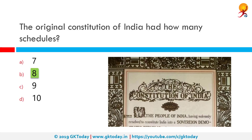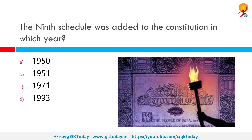The 35th Amendment made Sikkim an associate state. Once Sikkim became a state in India, the tenth schedule was repealed but later added once again by the 52nd Amendment Act 1985 in context with the anti-defection law. The 11th schedule was added by the 73rd Amendment and lists subjects under Panchayat Raj institutions or rural local government. The 12th schedule was added by the 74th Amendment and enlists subjects under municipalities or urban local government.